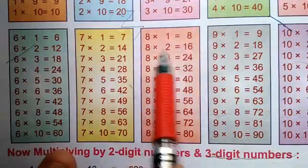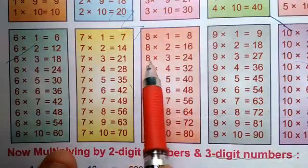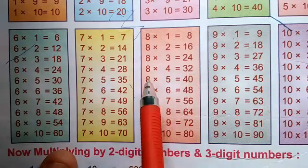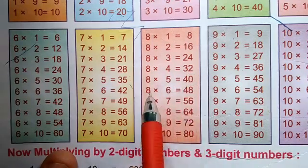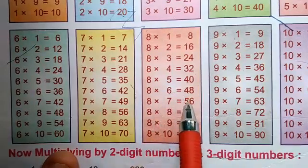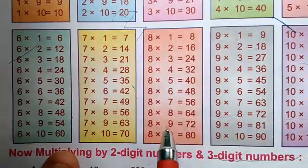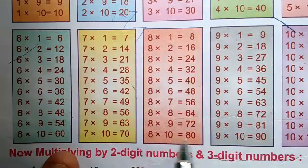8 times 2 is 16, 8 times 3 is 24, 8 times 4 is 32, 8 times 5 is 40, 8 times 6 is 48, 8 times 7 is 56, 8 times 8 is 64, 8 times 9 is 72, 8 times 10 is 80. Now table of 9.